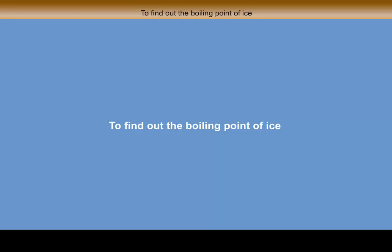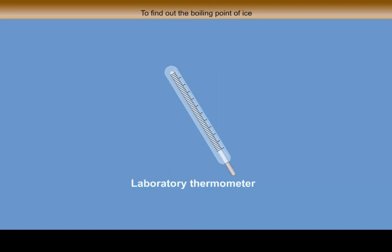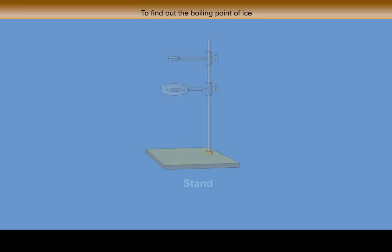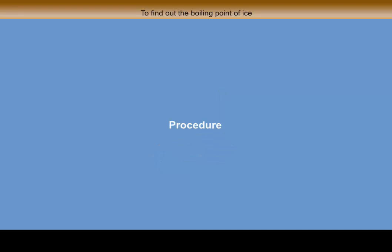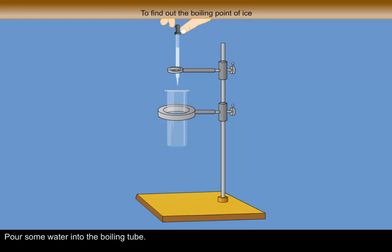To find out the boiling point of ice, things required: a boiling tube, a laboratory thermometer, a stand, some water, and a Bunsen burner. Procedure: take a boiling tube and fix it in a stand as shown in the animation. Pour some water into the boiling tube and suspend the thermometer in the boiling tube.